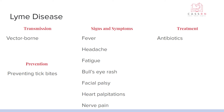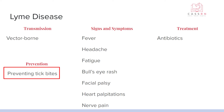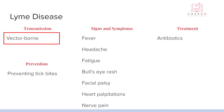Lyme disease is also not communicable but is common in the community, so it's important for the community health nurse to understand and educate about it. Depending on your area you might have lots of ticks — this is vector-borne from ticks, and prevention is preventing tick bites: wearing long sleeves and pants when hiking or camping, treating clothes with Permethrin, or using bug spray. Lyme disease has a characteristic bullseye rash, along with fever, headache, and fatigue, and can cause facial palsy, heart palpitations, and nerve pain. It's treated with antibiotics.